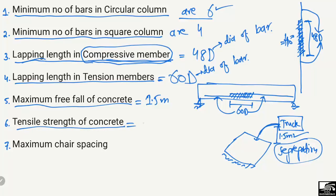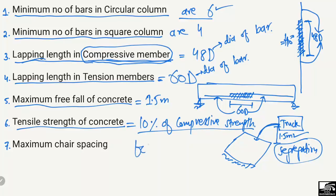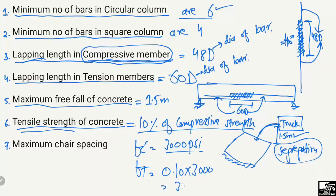The next point is the tensile strength of concrete. The tensile strength of concrete is 10 percent of its compressive strength. For example, if the compressive strength of concrete is 3000 psi, then the tensile strength equals 0.10 × 3000 = 300 psi. Concrete is weak in tension and is only designed for compression.